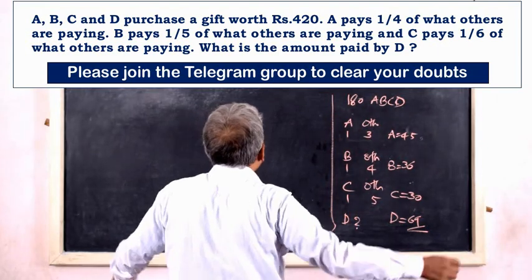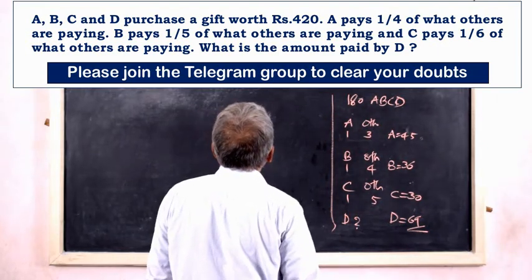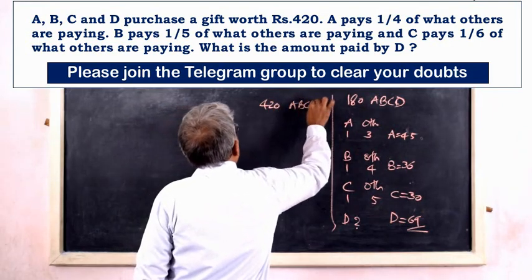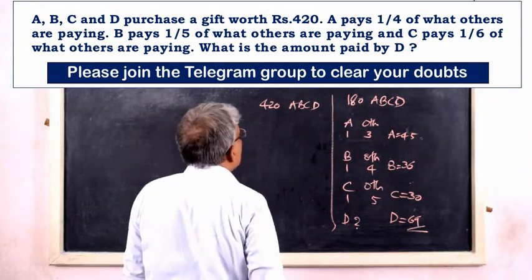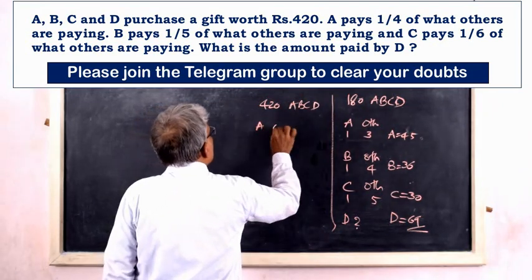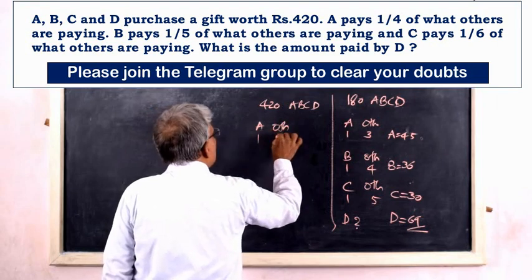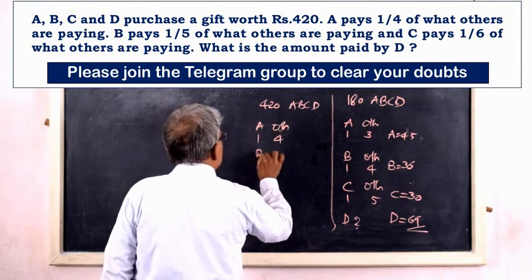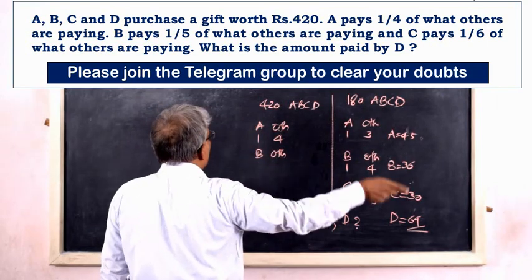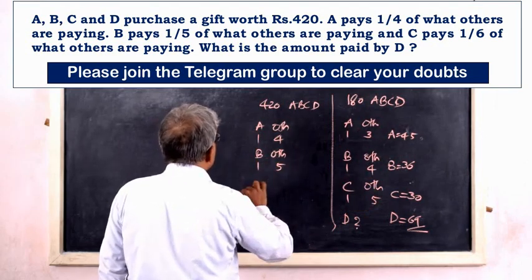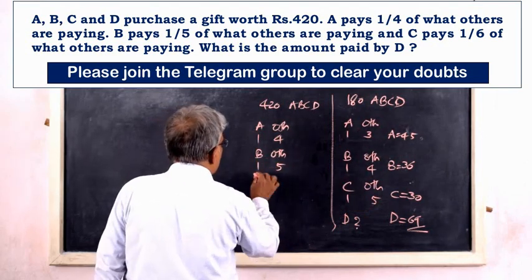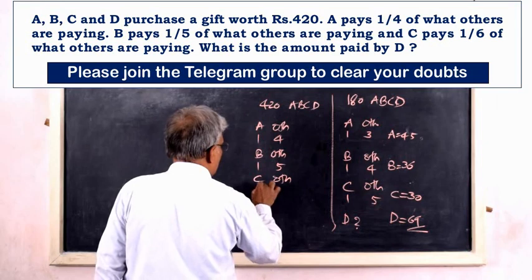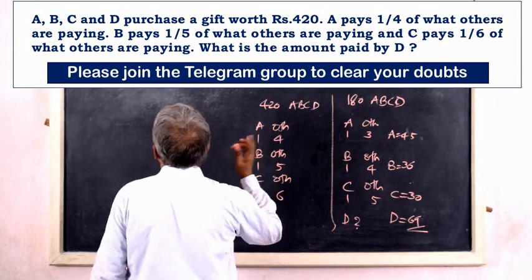Next question — this is how simple. A, B, C, D purchase a gift worth ₹420. A pays one-fourth of what others are paying. B pays one-fifth of what others are paying. C pays one-sixth of what others are paying. The remainder is D.